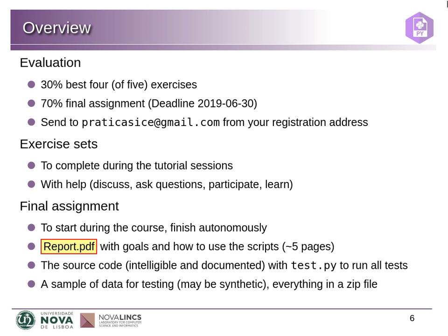For the final assignment, you should include a PDF file called 'report' where I can read what the idea is and what you did. The source code should also be readable and have some documentation. You should have one script called 'test' that I can use just to check if everything runs. For that you may need to include some data, but you don't need to include actual data — it's just to check if the script runs. If you have data that you haven't published yet, you can generate random values with the same format just to show how things work. I'm going to grade the code and how the processing works.